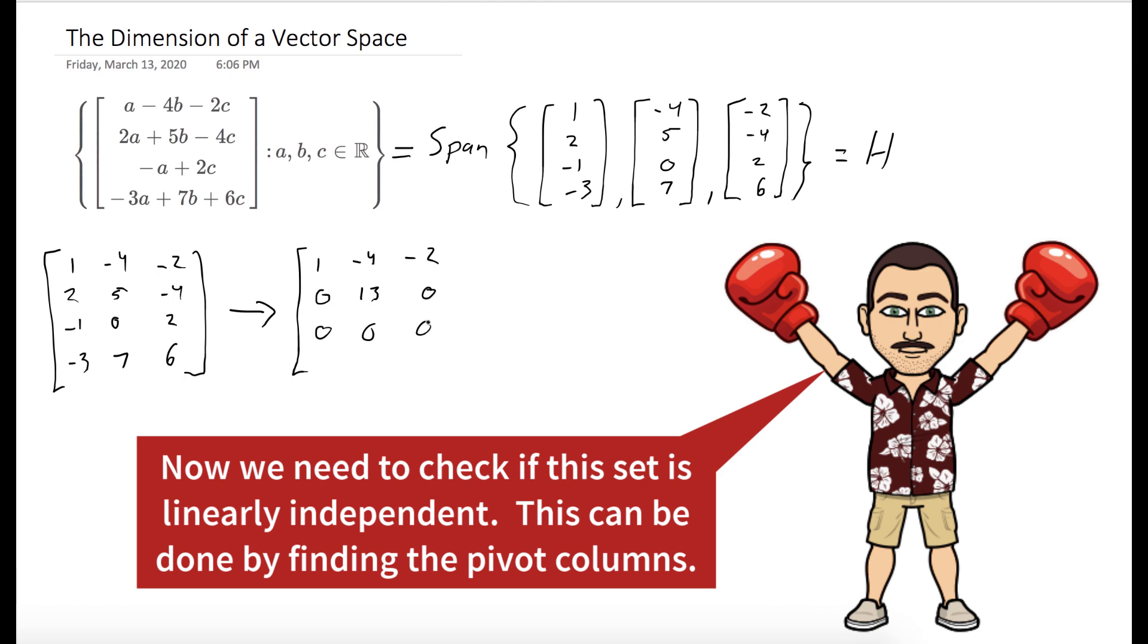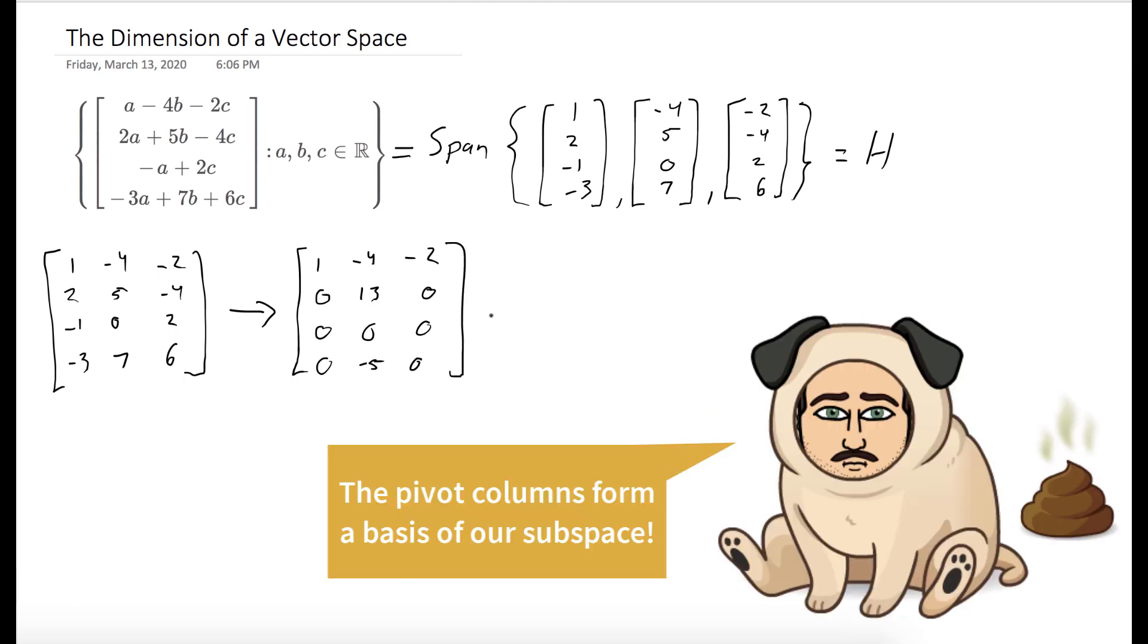So we'll row reduce. And we don't have to go all the way to reduced row echelon form. We just have to go far enough to find the pivot columns. And so we could see that the pivot columns are in the first and second column. So the first and second vector of our set forms a basis.